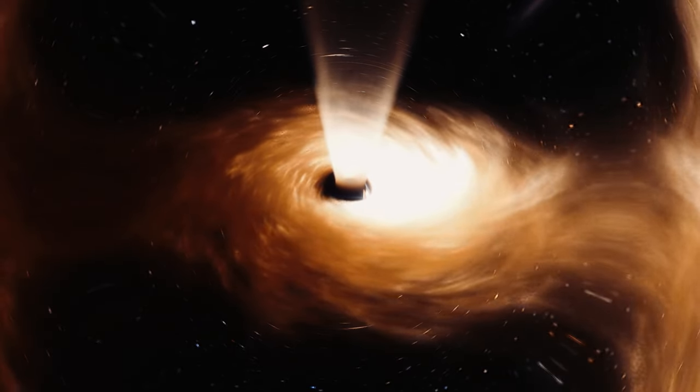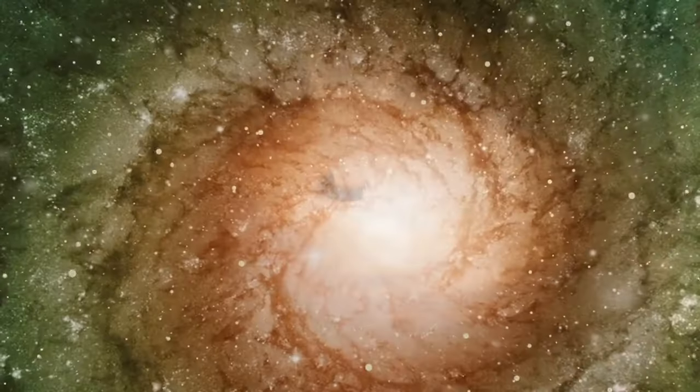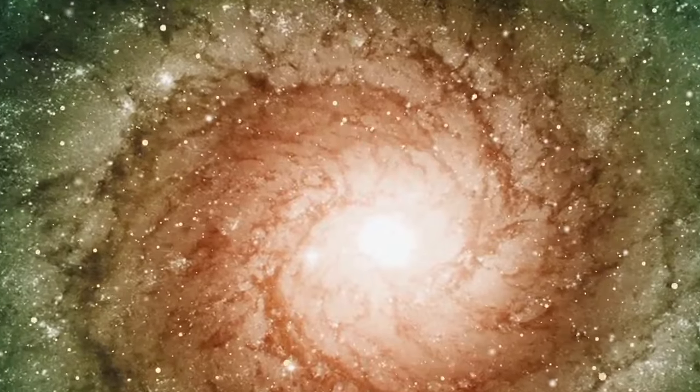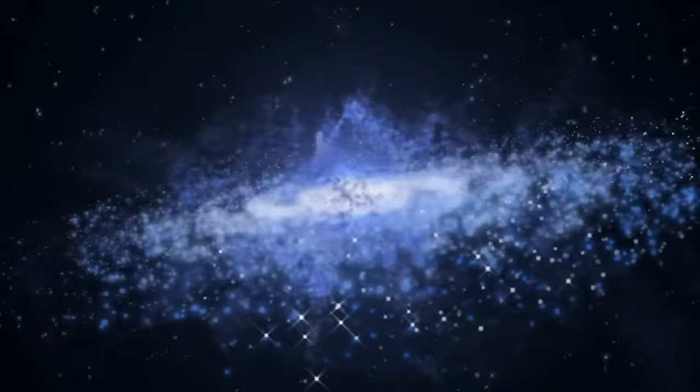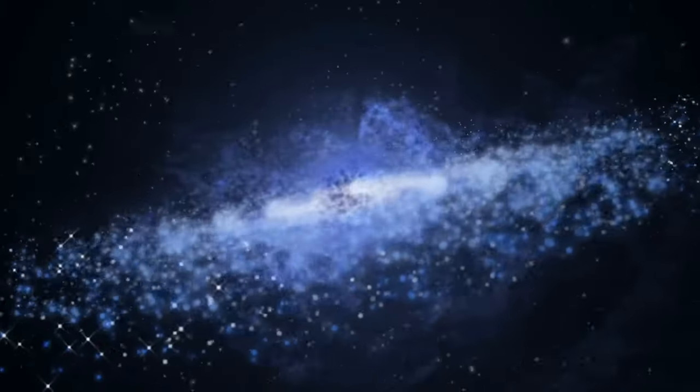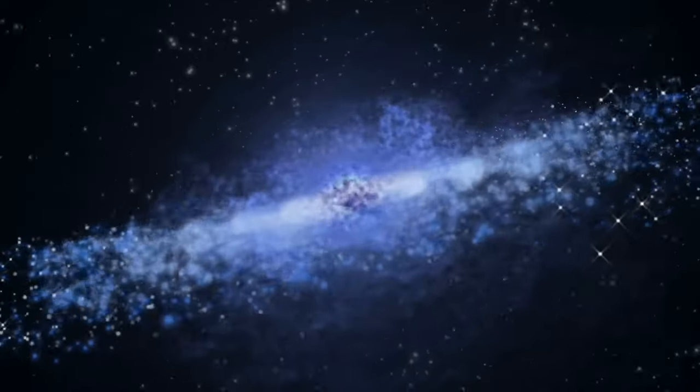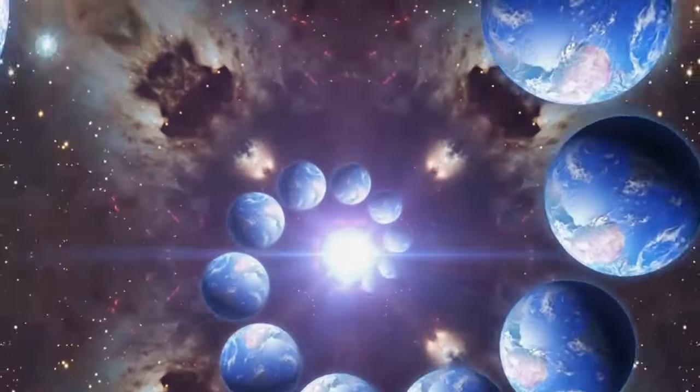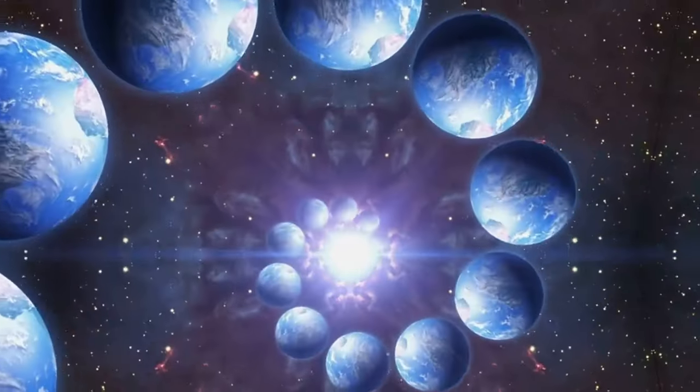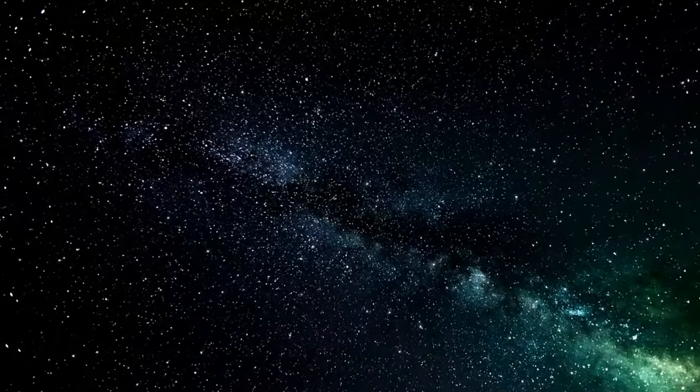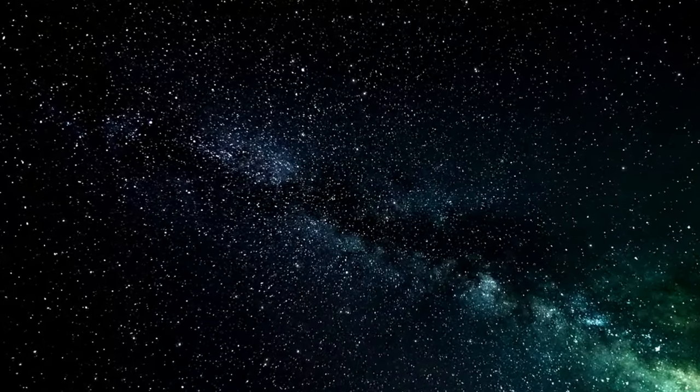Picture the universe as a giant loaf of raisin bread dough. As the dough bakes, it expands, and the raisins, or galaxies, move farther apart. This is the basic idea behind the expanding universe. But here's the twist. Instead of a steady, constant expansion, the universe is expanding faster and faster over time.